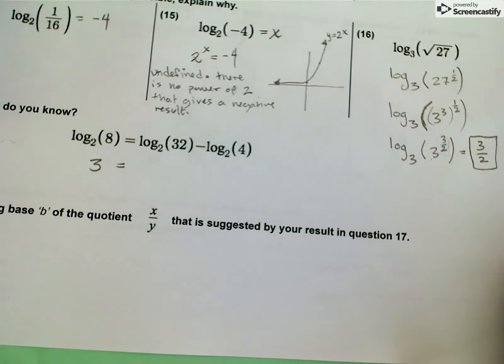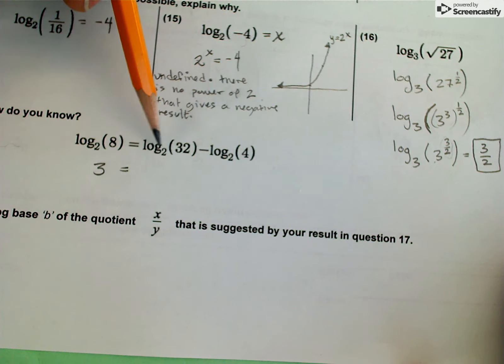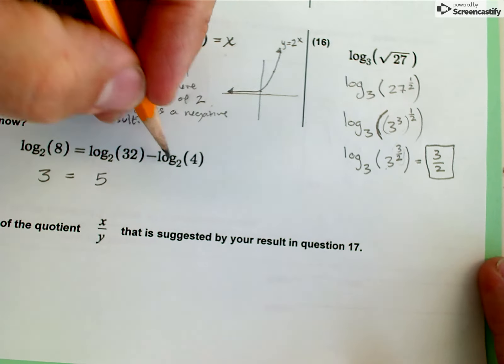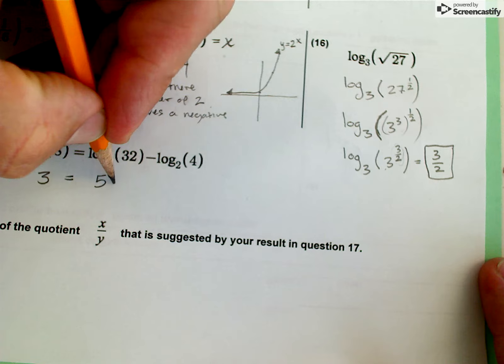If I go across to the other side of the equation, I see that log base 2 of 32 - well, 2 to what power equals 32? It's 5. And then log base 2 of 4, that's 2.